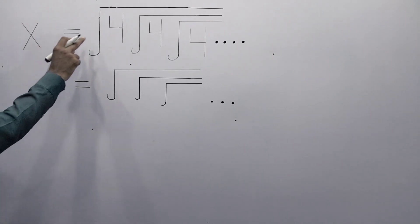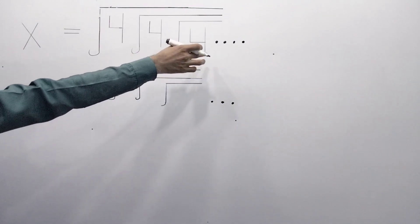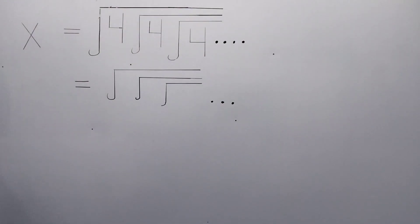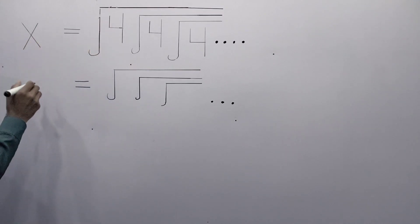A math problem: x is equal to the square root of 4, square root of 4, and again square root of 4, continuing infinitely. We are required to solve this problem and find the value of x.